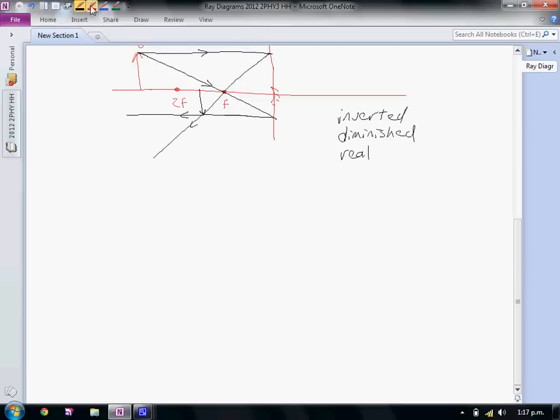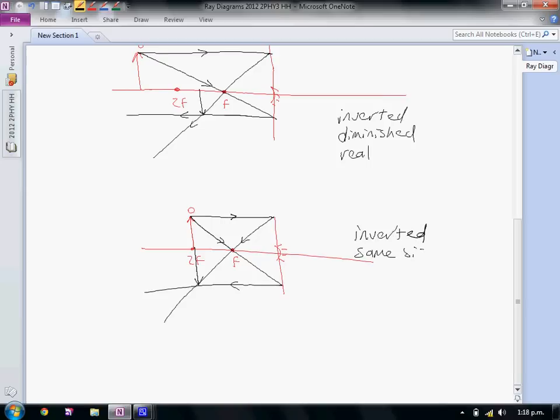Here's our mirror again. This time our object is going to be at 2f. Parallel light ray through the focal point, through the focal point parallel light ray. This is the only situation where you get the object and the image the same size for a concave lens. It's inverted, same size so magnification equals one, and it's a real image.